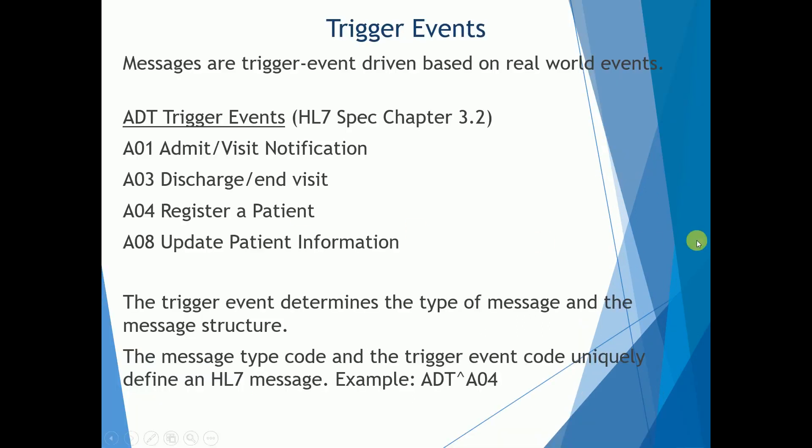These are the more common types of trigger events that you'll see. You have A01, which is admit — admitting a patient to a hospital. A03 is discharging a patient from a hospital or ending their visit. A04 is registering a new patient. And A08 is update patient information — for example, if the patient needs to update their address, medical record number, or patient ID.